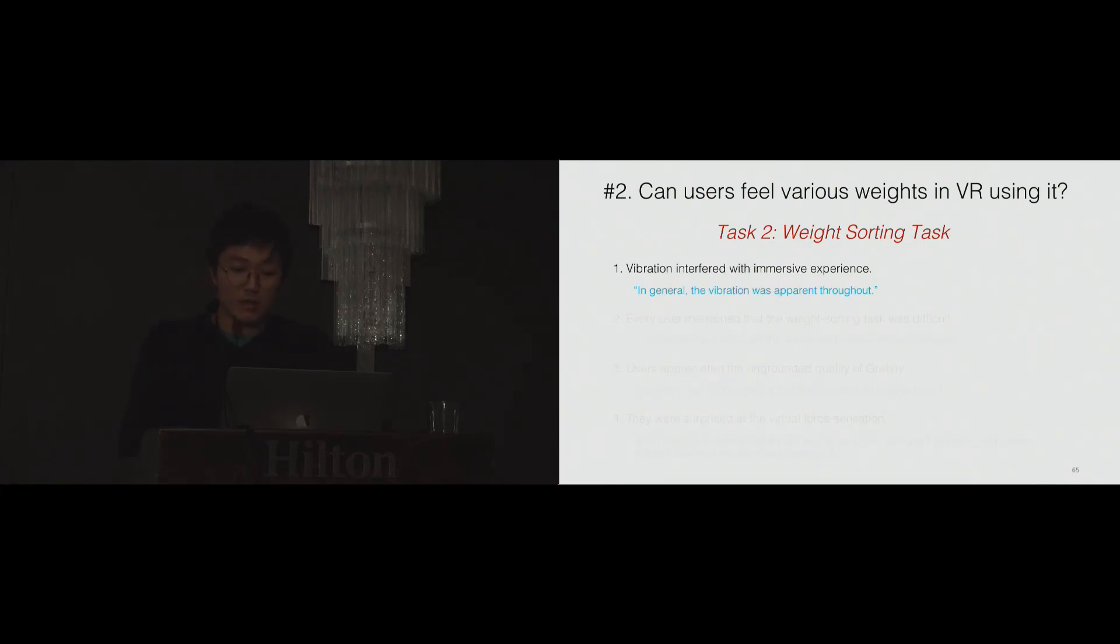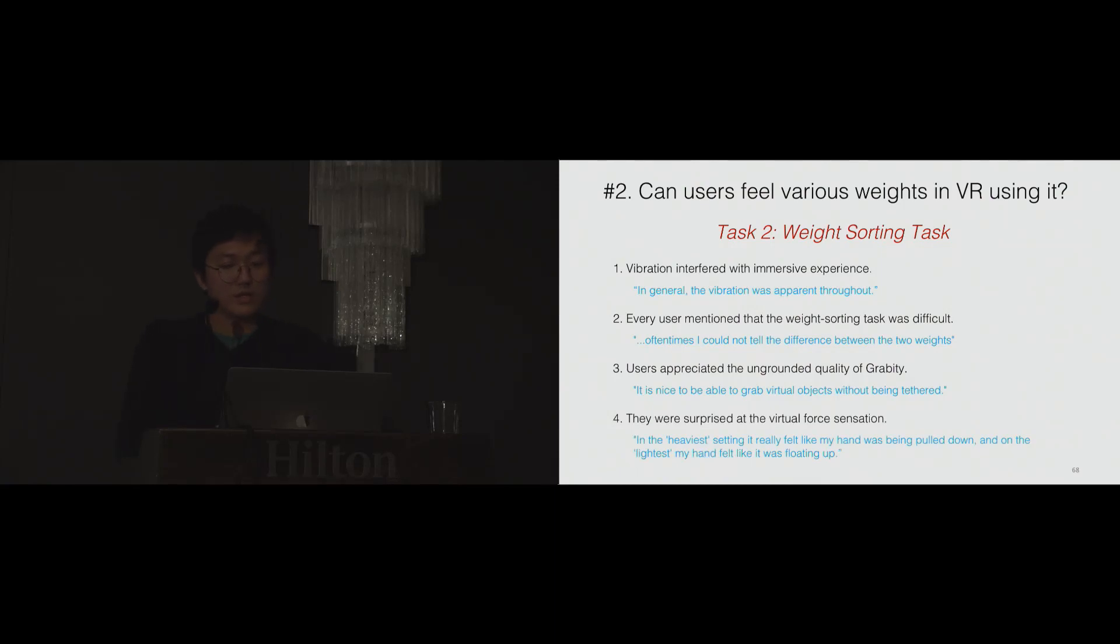The following qualitative feedback tell how users thought. First, vibration was apparently interfered with some users' VR experience. Some users also felt that it was really difficult to differentiate the three weights. It makes sense because the amount of virtual forces were pretty small, and there were also vibrations interfering the perception. Users liked the fact that Gravity is not grounded to outside, and they had a large range of motion. Finally, they were surprised about the haptic illusion in general.